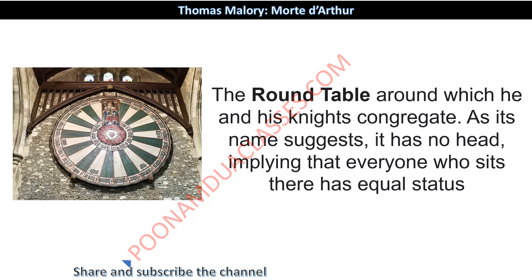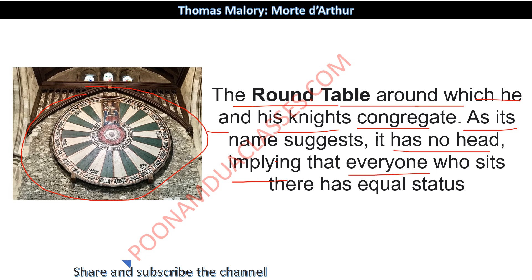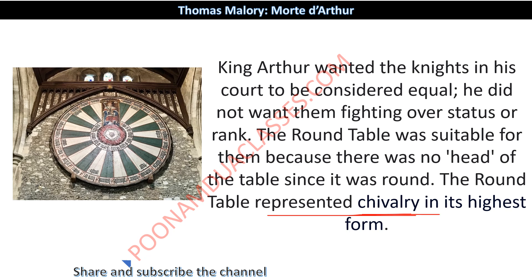So how is the Round Table a symbolism — this question can come up. The Round Table around which he and his knights congregate — King Arthur and his knights. As the name suggests it is round, and it has no head, implying that everyone who sits there has equal status. Everyone can equally see one another; there is no 'I am higher or you are lower' at the Round Table. It was actually the representation of chivalry and the impartial behavior of the head.